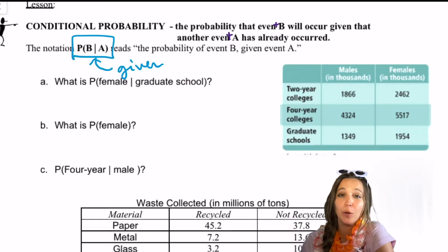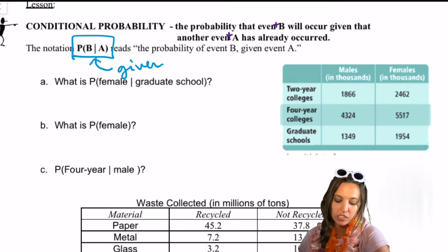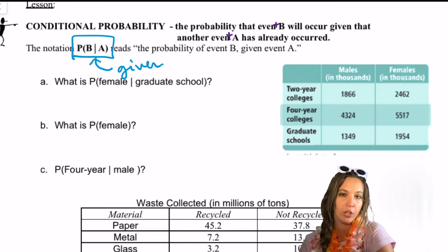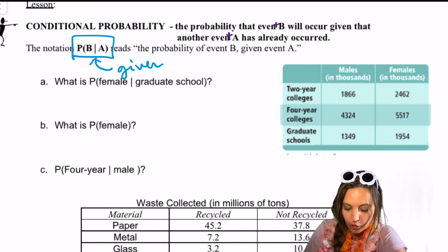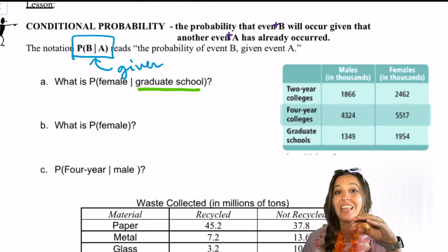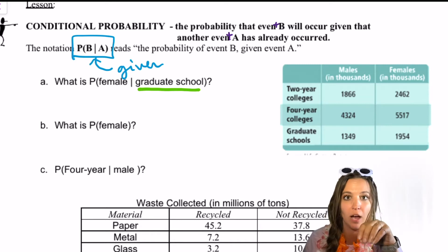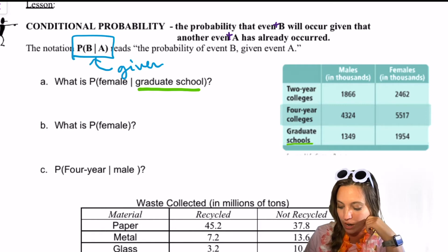Let's look at this first example. Here we're given a table of data about what kinds of schools different people went to, split into male and female. If we look at the first part, it's asking what's the probability that we choose a female given that we're looking at those who went to graduate school. Remember that bar means 'given,' so we focus in on graduate school first. Probability is the desired outcome divided by the total possible outcomes, and the given tells us where to look for our total possible outcomes — it's the important part to pay attention to first.